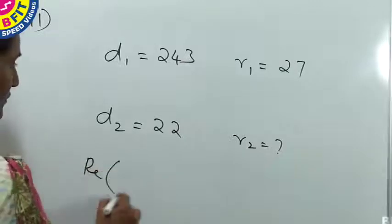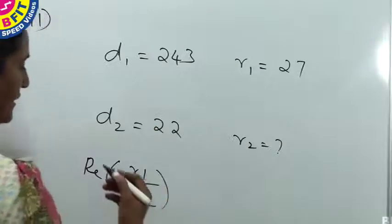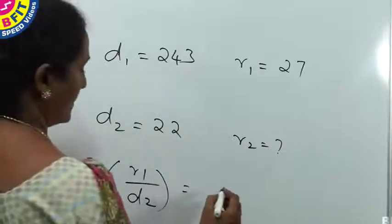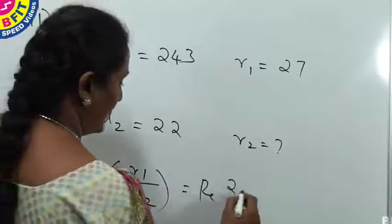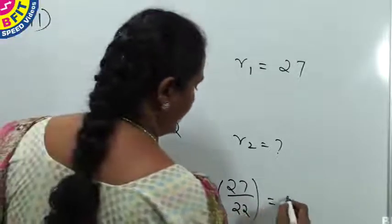The second remainder r2 is the remainder of the first remainder divided by the second divisor, which equals the remainder of 27 divided by 22, which equals 5.